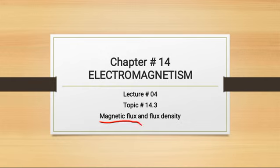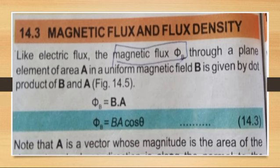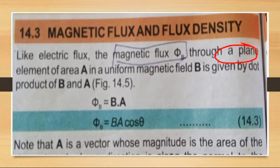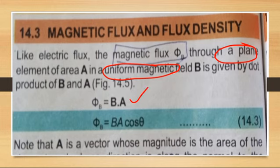Just like electric flux, you can define magnetic flux: the magnetic field lines passing through any area of an element is known as magnetic flux. Today we will discuss magnetic flux in a uniform magnetic field through an element having a plain area. We are going to calculate magnetic flux through a plain element of area A in a uniform magnetic field, and we will discuss three cases.